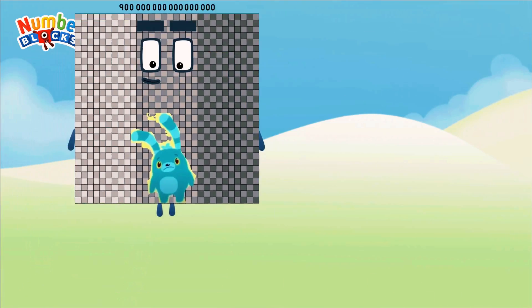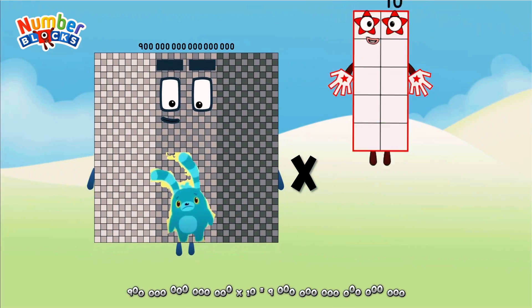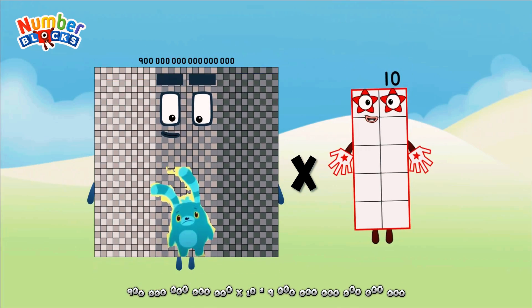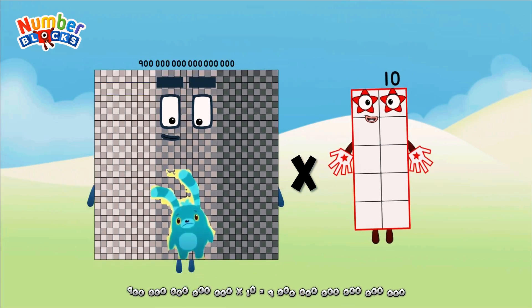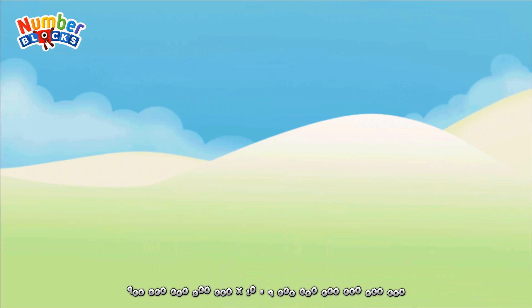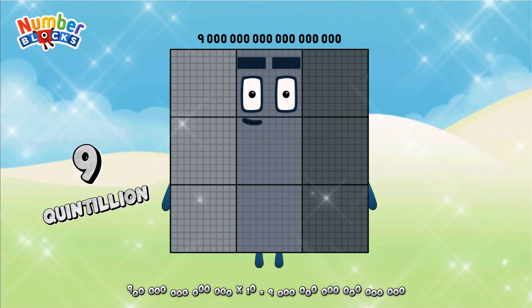9 quadrillion, multiplicated by 10, equals 9 quintillion.